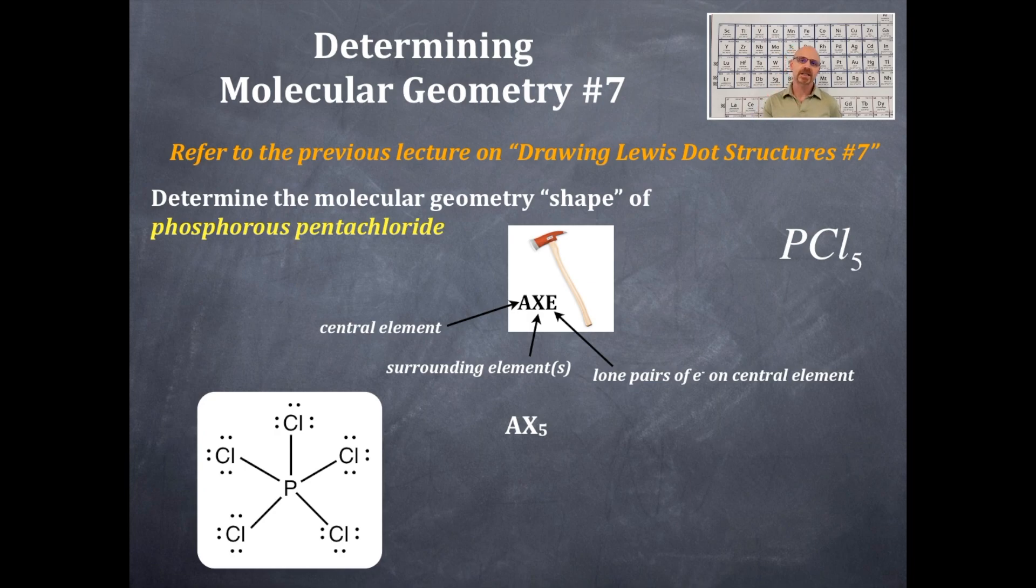How many bonding domains and how many non-bonding domains? You have five bonding domains and zero non-bonding domains. The five bonding domains are the single bonds all around the central phosphorus, and the no bonding domains is I don't have any lone pairs of electrons on the phosphorus itself.